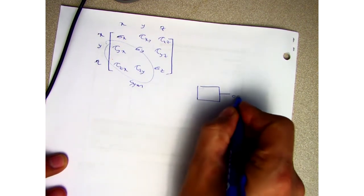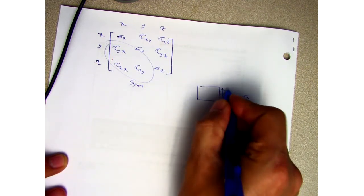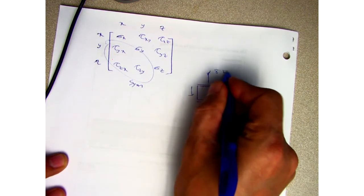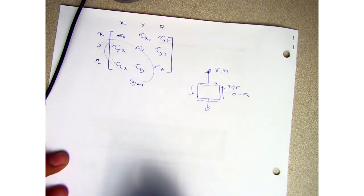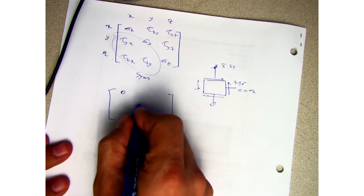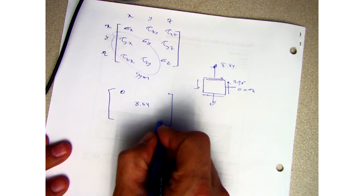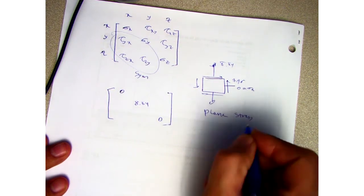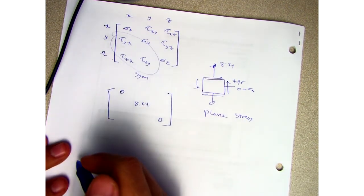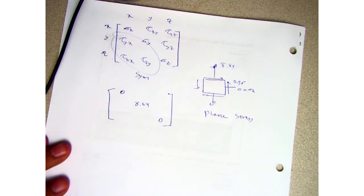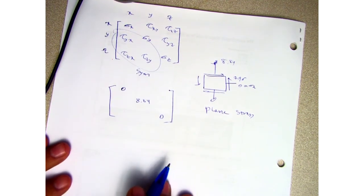So let's look at our problem again. I have sigma x zero, I have tau xy was 7.96. Here is the same thing. For sigma y, I had 8.84, and then I had it here. So let's put it in this formula. Sigma x is zero, sigma y is 8.84, sigma z is zero because it's a plane stress condition.